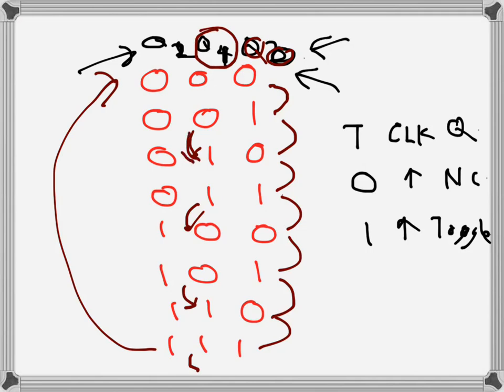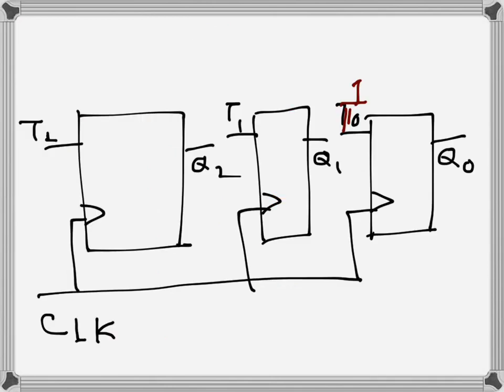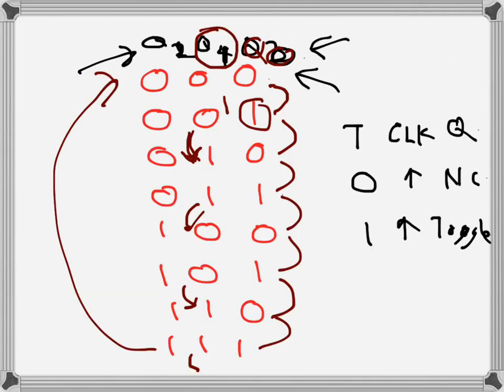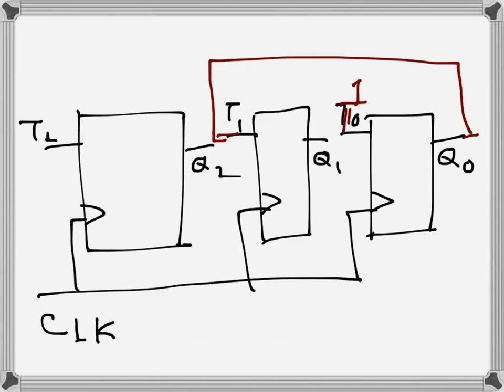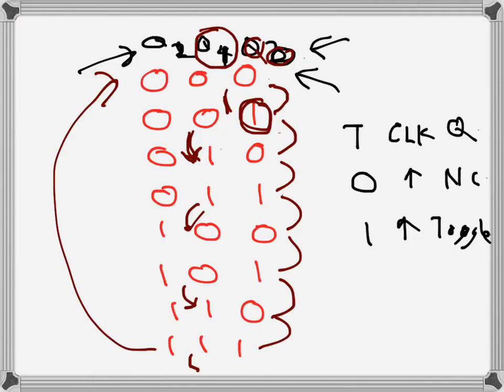We can see that Q1 is toggling when Q0 is 1. So we can connect Q0 as input to T1. When initially Q0 is 0, the T1 flip-flop is getting 0 as input so it's not toggling. But at this state when Q0 is 1, the input at T1 is getting 1 so it's toggling. Similarly it will happen here as well.